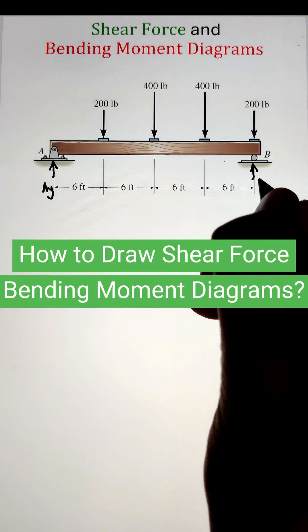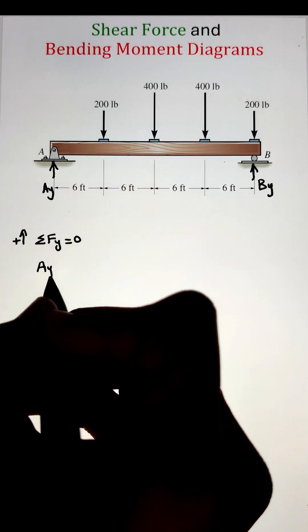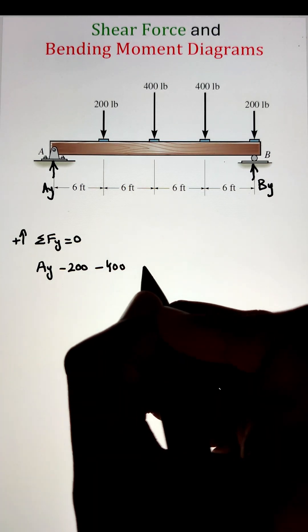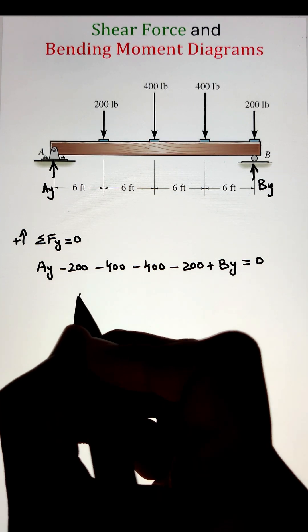In order to figure out the shear force and bending moment diagram, we first need to figure out the support reactions at point A and B. Since all the loads are acting vertically downwards, we are interested in the vertical support reactions.